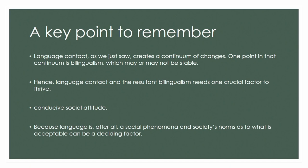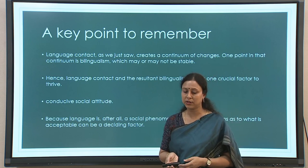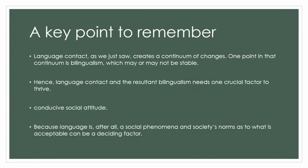Theoretically speaking, all language contact leading to bilingualism has language shift as one very strong possibility. But societies that have stable bilingualism over a long period of time have shown that there is one crucial factor: the conducive social attitude. Attitude is a very important aspect of stable bilingualism because language is a social phenomenon and society has its norms — behavioral patterns, the accepted way of behaving in a given context, which also includes language. If the society's norms with respect to language are conducive for bilingualism, then bilingualism will thrive.